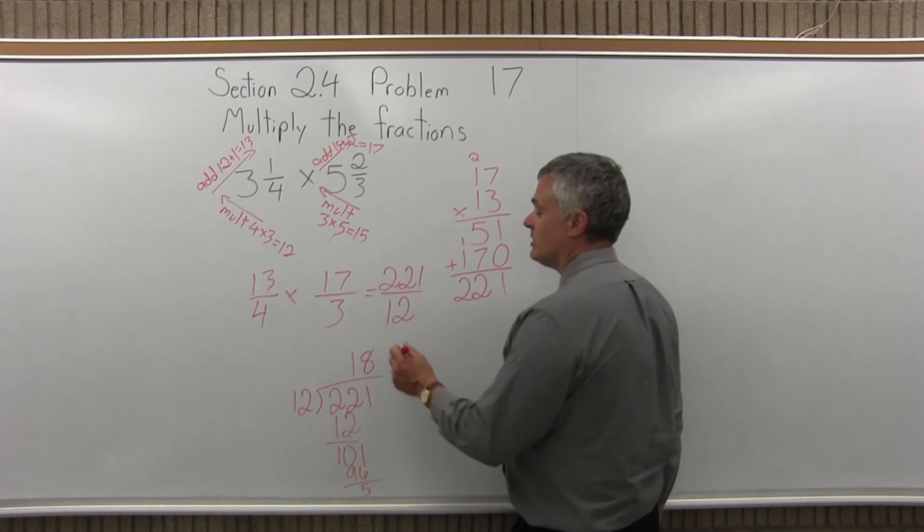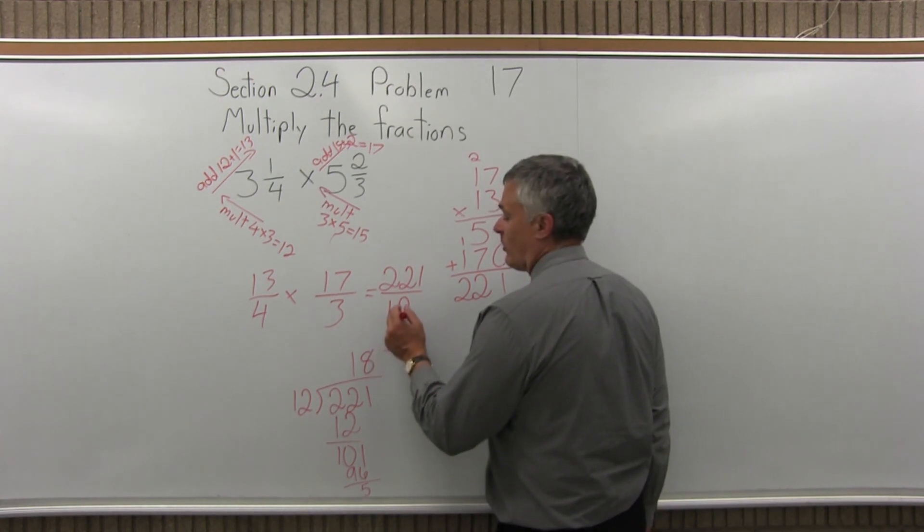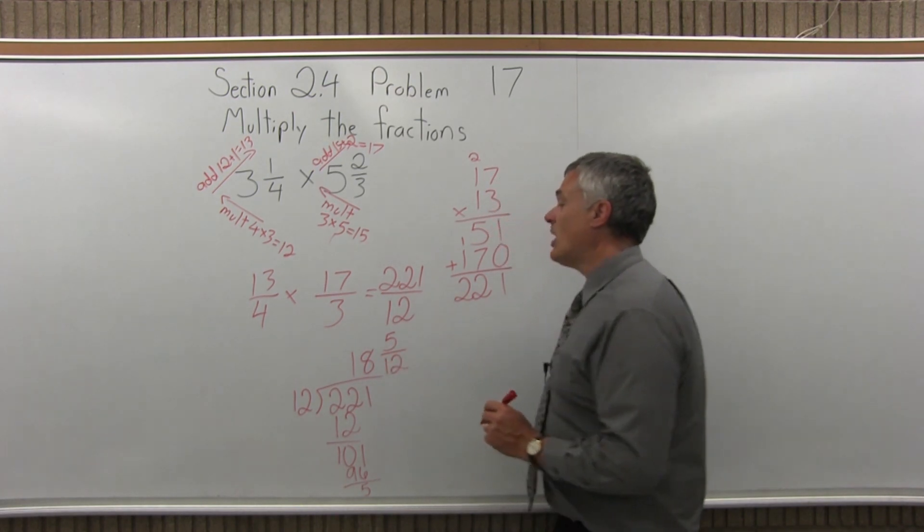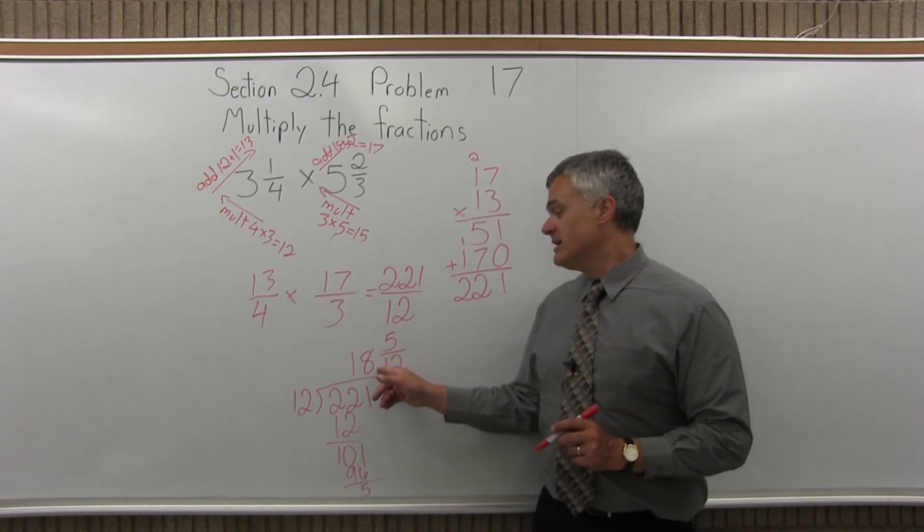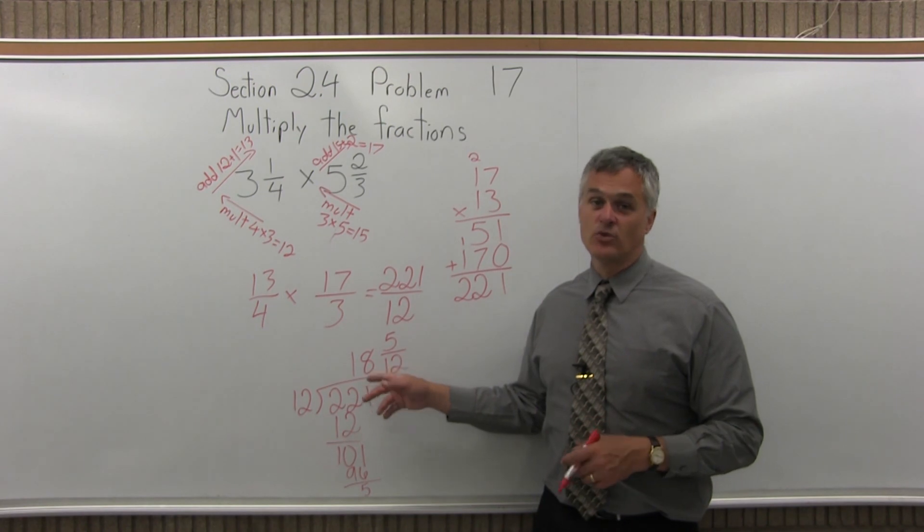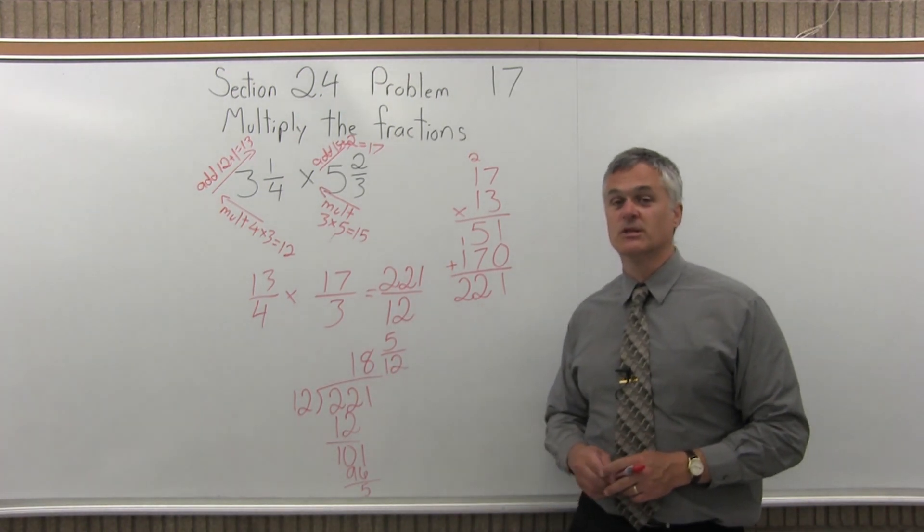So the remainder will be your numerator, and what was the denominator, or the number in front of your division stays the denominator. So, 221 over 12 is equivalent to 18 and 5/12. So you really could write the answer either way.